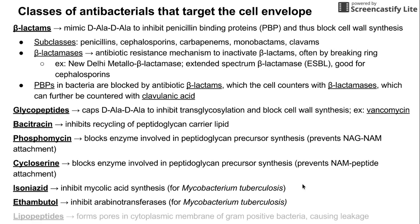The last class is lipopeptides — antibacterials that form small holes in the cytoplasmic membrane, particularly working in gram-positive bacteria. When you form pores in the membrane, it causes leakage and spillage of cellular material into the surrounding space. This has been a brief overview of the different classes of antibiotics targeting the cell envelope; two are specifically for Mycobacterium tuberculosis, and the rest have a general mechanism overview. Thanks for listening.